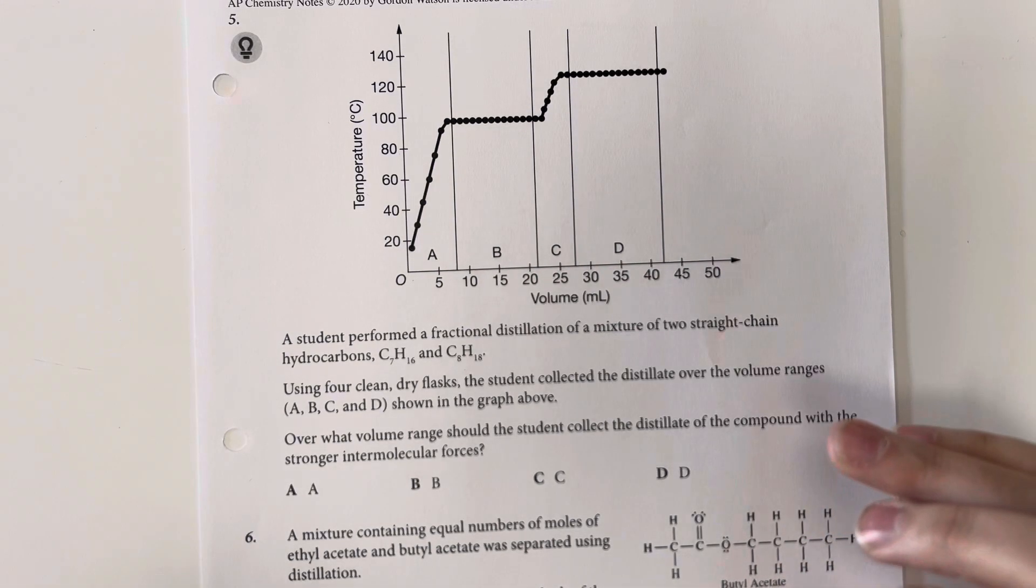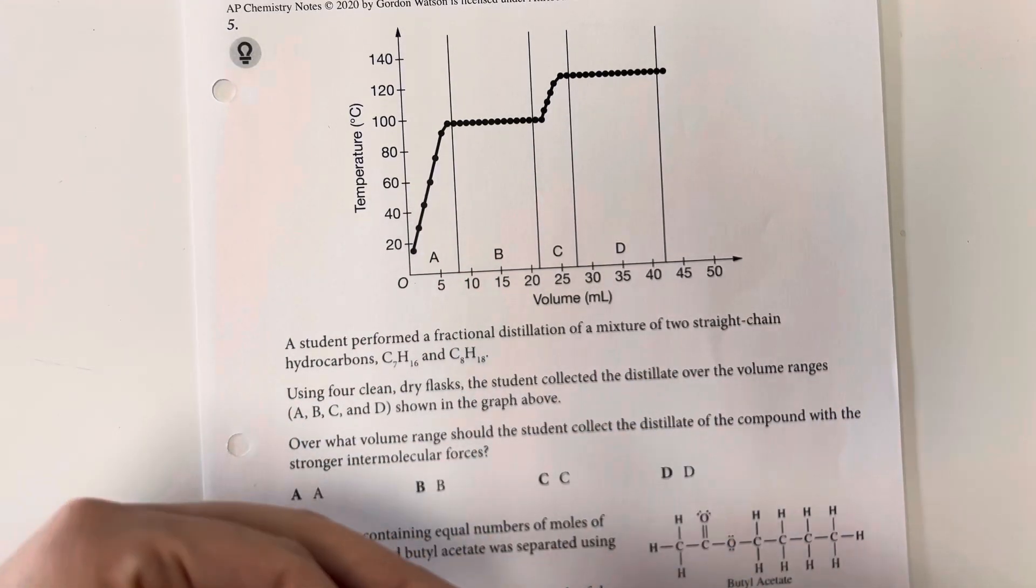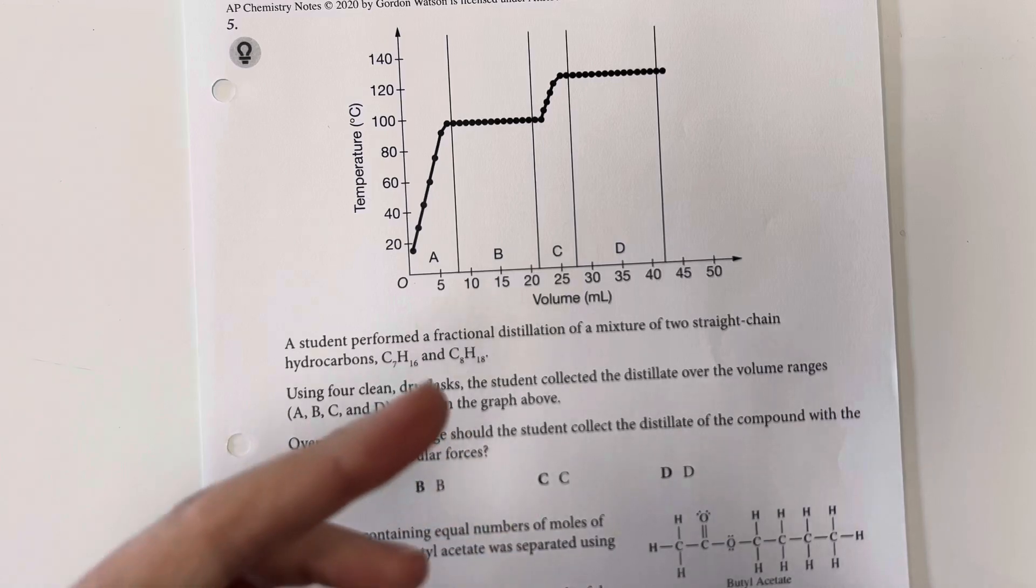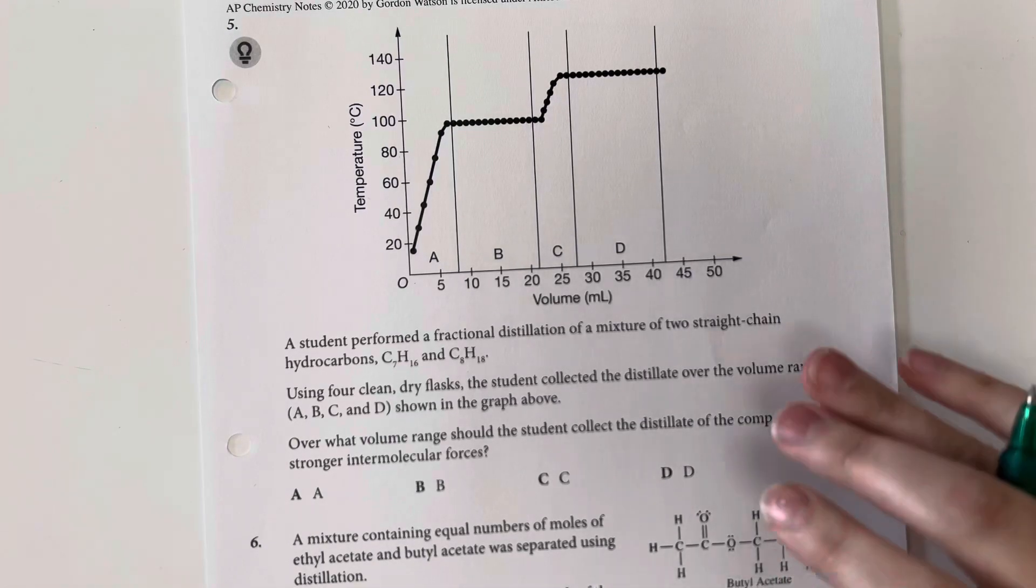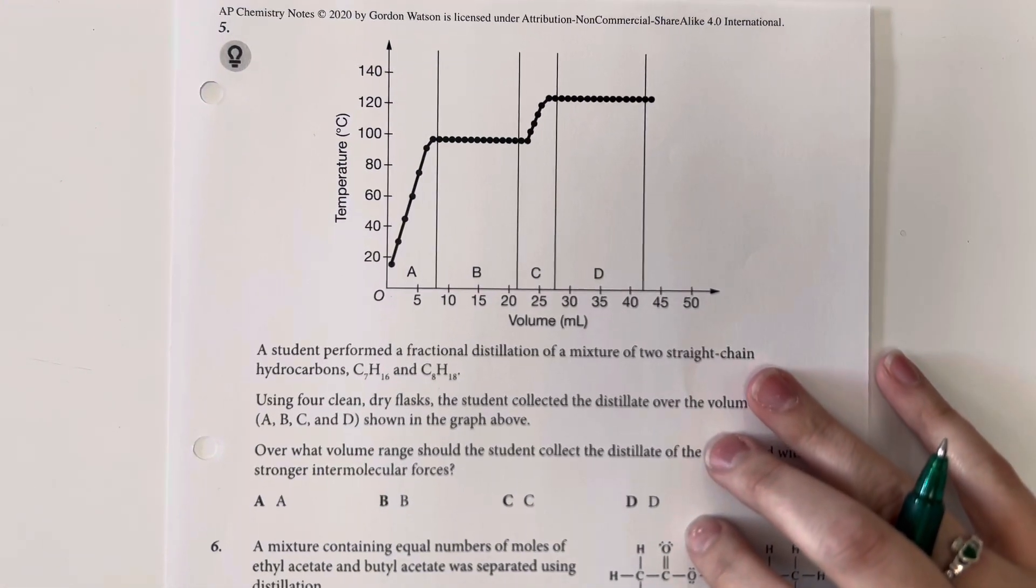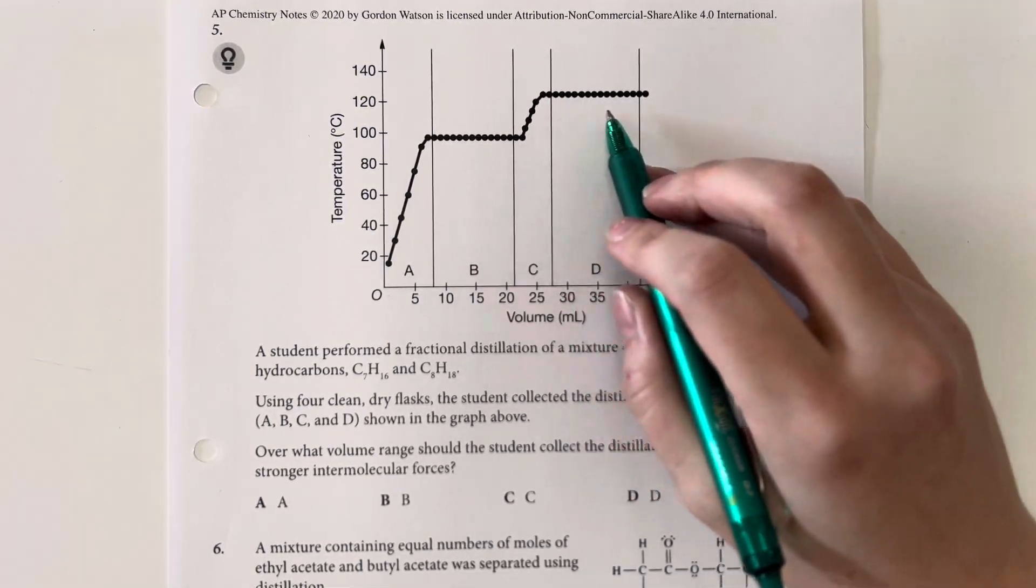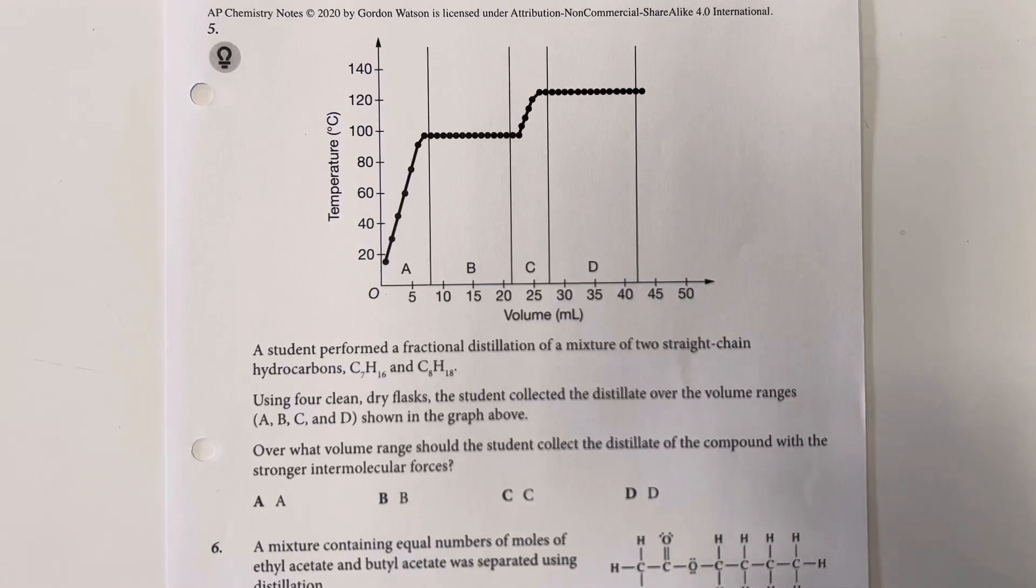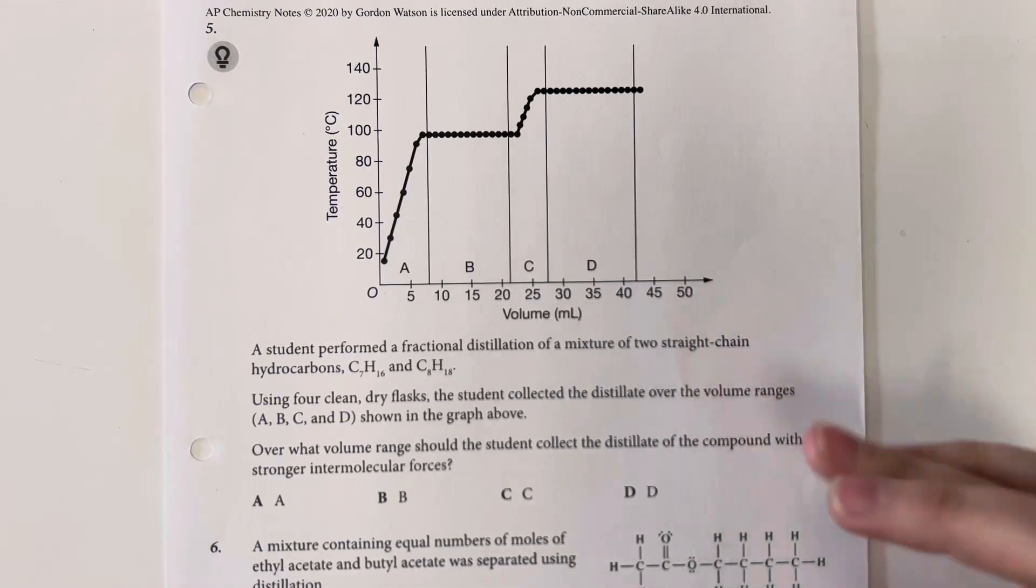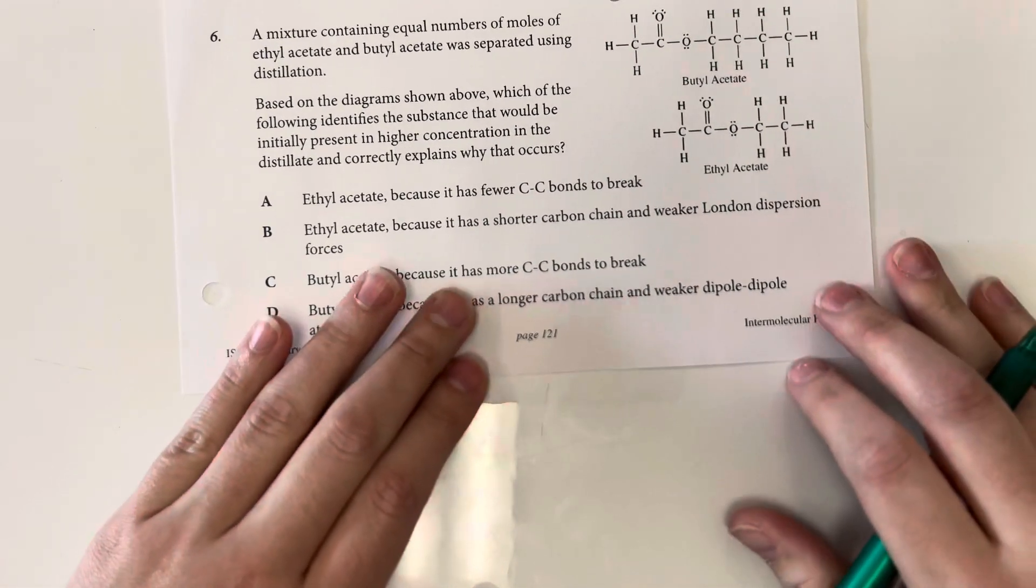So the stronger the intermolecular force, the higher the boiling temperature of that compound is going to be because we're going to have a relative stickiness between those compounds. They're not going to want to change state as readily. And so the higher boiling point step here is going to be whatever compound has a higher intermolecular force. So option choice D is going to be my best bet.